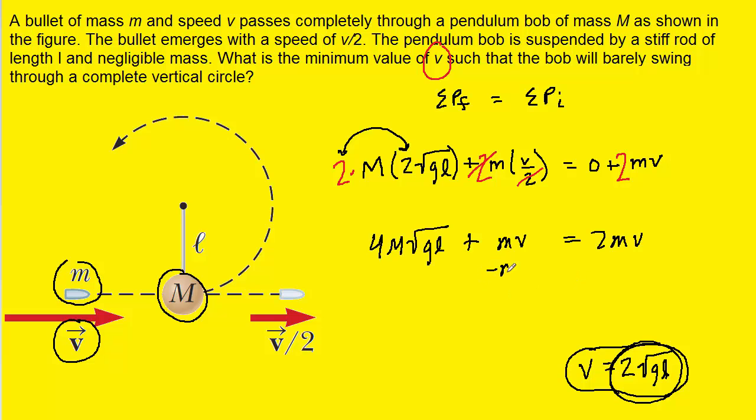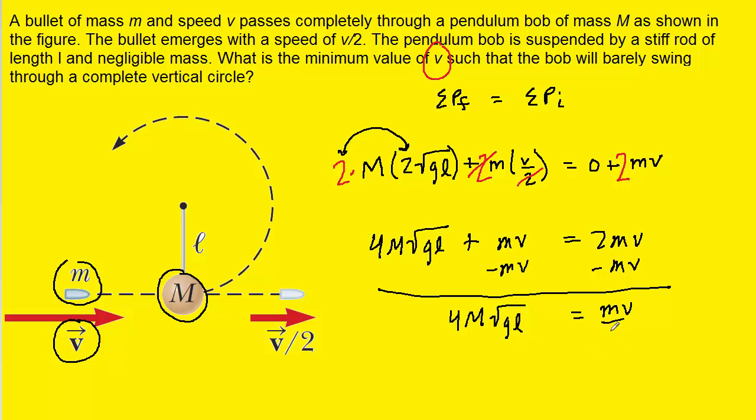Next, we can subtract mv from both sides of the equation. And that's going to leave us with mv on the right-hand side. And then this term 4, uppercase M, times the square root of GL. And then finally, we can divide both sides of the equation by lowercase m.